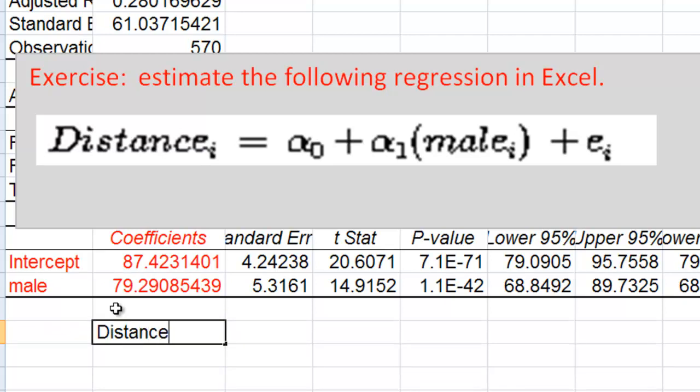This means if we were developing, writing down our regression equation, we would say that distance equals 87.423 plus 79.291 times the male dummy variable plus error.